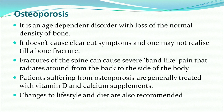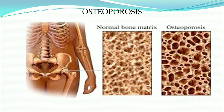The next disease is osteoporosis. It is an age-dependent disorder with loss of normal bone density. It doesn't cause clear-cut symptoms and one may not realize until a bone fractures. Fractures of the spine can cause severe band-like pain that radiates from the back to the side of the body. Patients suffering from osteoporosis are generally treated with vitamin D and calcium supplements. Change of lifestyle and diet is highly recommended. The figure shows the difference between normal bone matrix and bone matrix in osteoporosis.